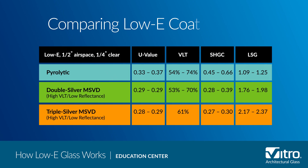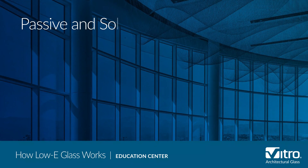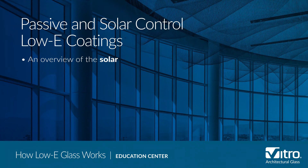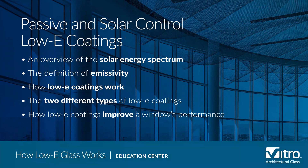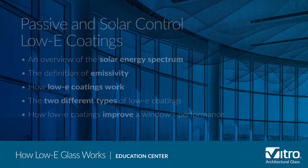As a general rule, passive low-e coatings work well in heating dominated climates, while solar control low-e coatings are typically recommended for cooling dominated climates. To wrap up, today we covered the solar energy spectrum, the definition of emissivity, how low-e coatings work, the types of low-e coatings, and how low-e coatings improve a window's performance.